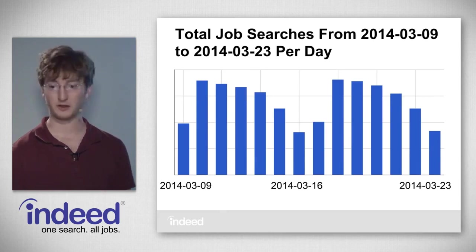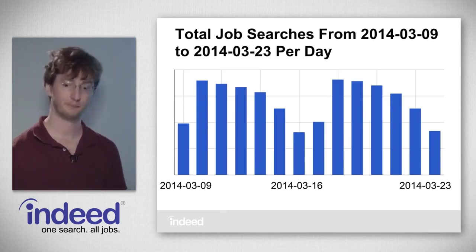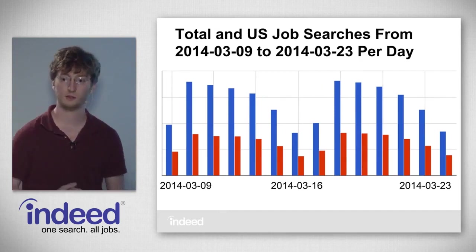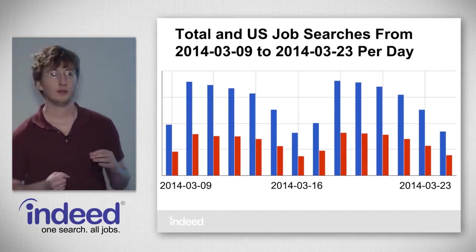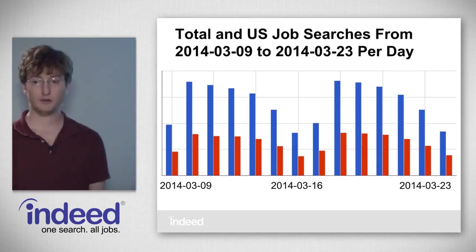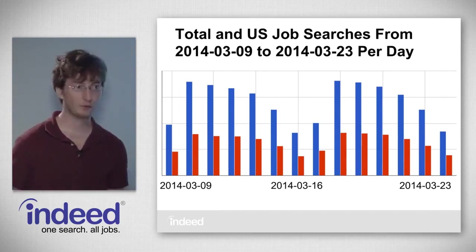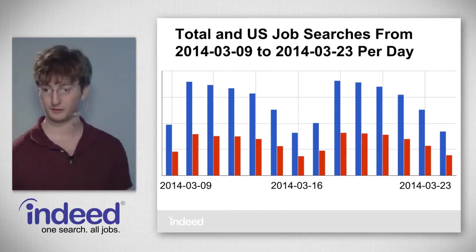That answers: how many job searches happen per day in this time range. Our next question is a little more complicated — how many job searches happened per day in this time range in the U.S. Emotep can also answer this question, but it requires going further into inverted indexes, because inverted indexes allow us to do this operation very efficiently.